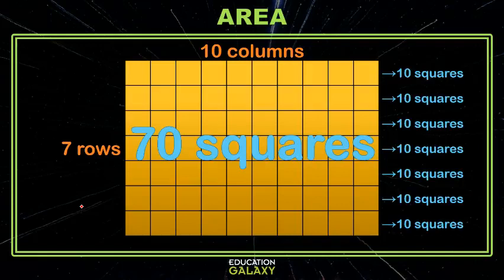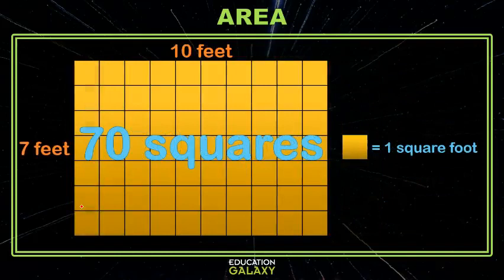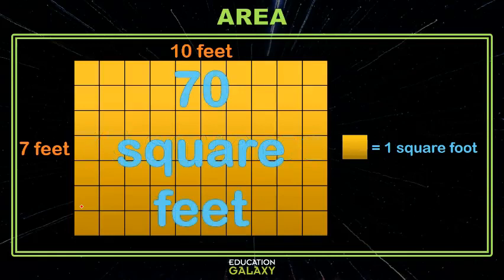Well in painting a wall 70 squares isn't super helpful, but if we know the actual dimensions of the wall like seven feet and ten feet and then we know that each square is one square foot, then we would know that that 70 squares is really 70 square feet and that's useful information.